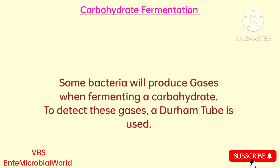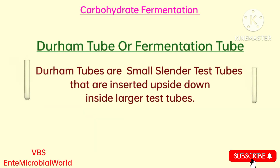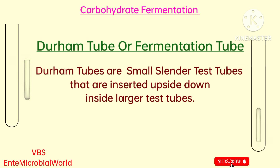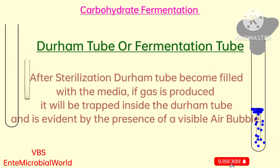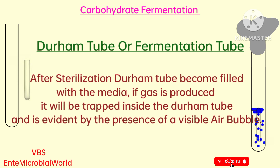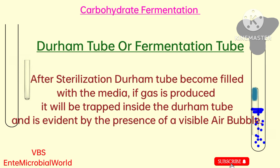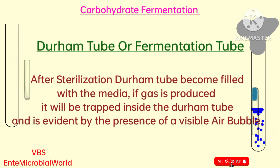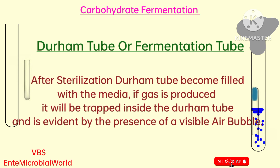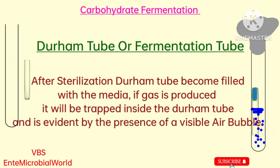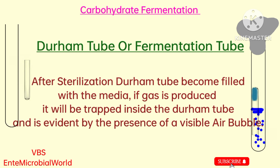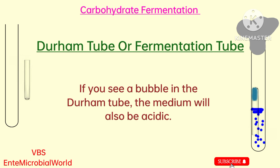To detect these gases, a Durham tube is used. Durham tubes are small, slender test tubes which are inserted upside down inside larger test tubes. After sterilization, the Durham tube becomes filled with the media. If gas is produced, it will be trapped inside the Durham tube and is evident by the presence of a visible air bubble. If you see a bubble in the Durham tube, the medium will also be acidic.